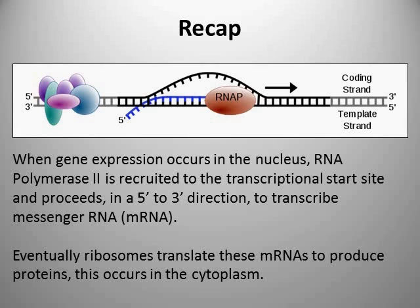A very basic recap of what we talked about in the DNA transcription lecture: in eukaryotic organisms such as ourselves, when gene expression occurs, a large multiprotein enzyme complex called RNA polymerase 2 is recruited to the transcriptional start site of a gene via interactions with numerous transcription factors and other protein complexes. Once there and given the correct signals, this RNA polymerase 2 enzyme starts copying the information in the DNA in a 5' to 3' direction to transcribe a messenger RNA copy of that information.